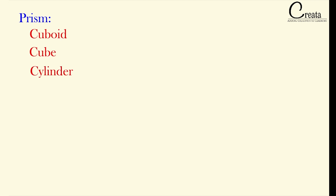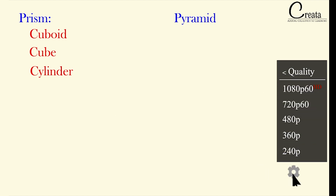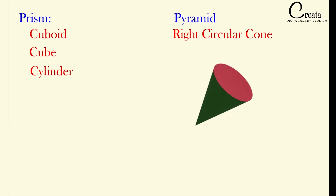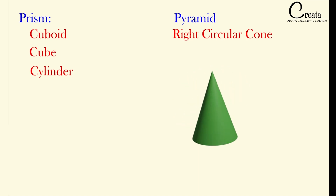All other 3D shapes which are not prisms are known as pyramids. So in this lecture, we will take our first type of pyramid, that is a right circular cone. Our right circular cone will not be formed by stacking up a 2D figure — it is slightly different. So first of all, let's see what is a right circular cone.